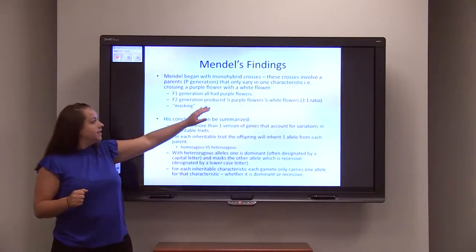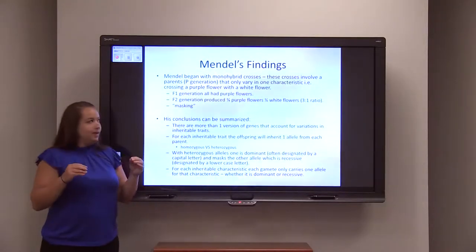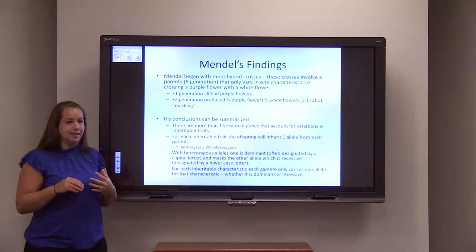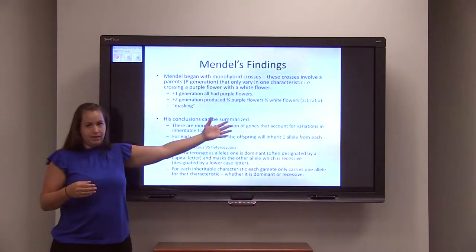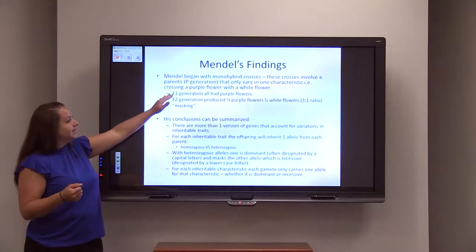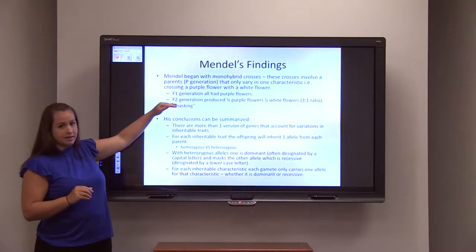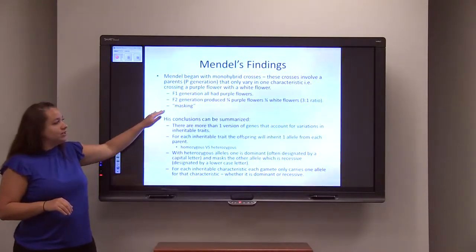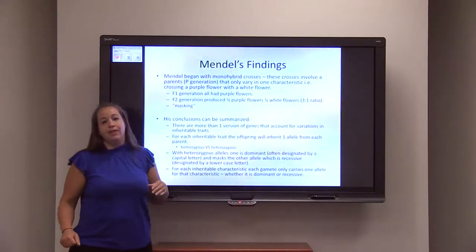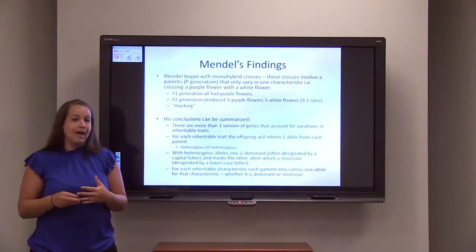Gregor Mendel first thought that crossing a purple flower with a white flower should produce some kind of blend, maybe a light purple colored flower. What he found in the first generation — also known as the F1 generation — is that all of the flowers were purple. Knowing there had to be a characteristic for purple and for white, he concluded the purple characteristic was masking the white. He then crossed the F1 generation with each other to create an F2 generation, where three fourths were purple flowers and one fourth were white flowers. This proved that the white flower allele did not disappear; it was only being masked by the more dominant allele for flower color, which is purple.